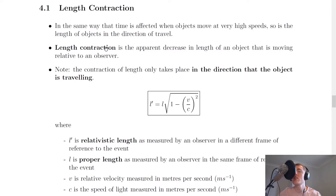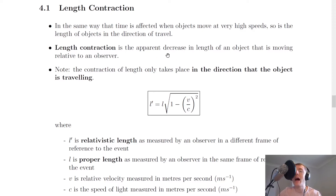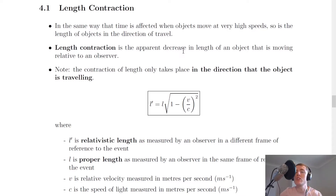Contraction is the opposite of dilation because contraction is getting smaller, whereas dilation was getting bigger for time dilation. We're talking about lengths that can get smaller, and again we're talking about apparent decreases because it's not necessarily decreasing — it's just appearing to decrease according to the observer.